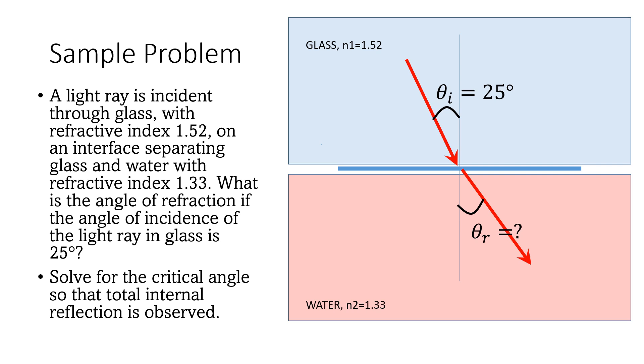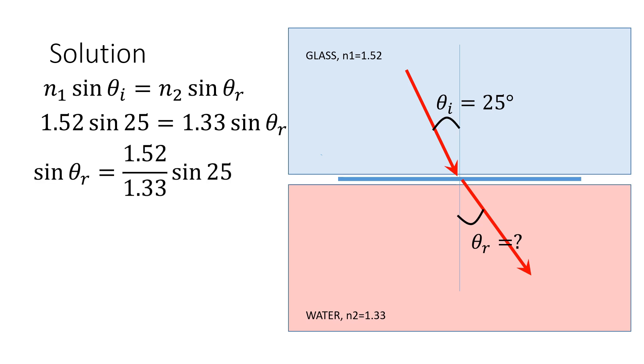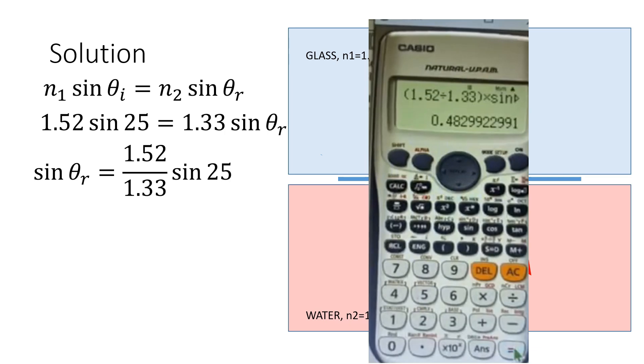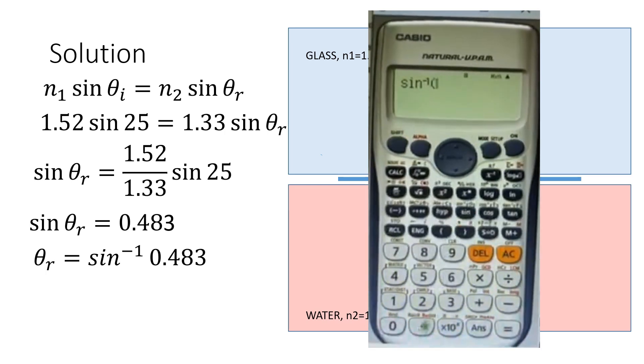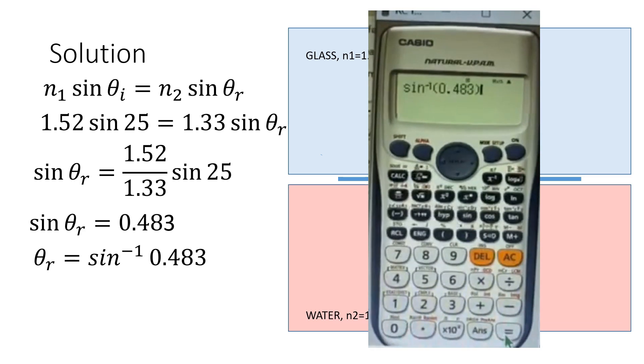From Snell's law, let's plug in the values. Then we divide both sides by 1.33 so we can solve for sine theta r using our calculator. The value for sine theta r is equal to 0.483. To solve for the value of the refractive angle, let us get the inverse sine of 0.483. From our calculator, the refractive angle is equal to 28.88 degrees.